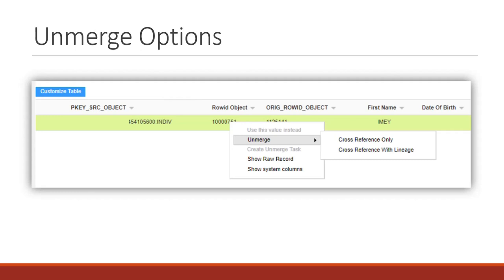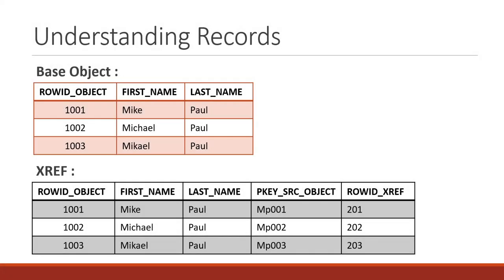So what are these two options and how do they work internally? That is what we are going to see in today's session. Before seeing how those unmerges happen, let's understand the records first. Assume that there are three records in the base object table with row ID objects 1001, 1002, and 1003, each with first names Mike, Michael, and Michael respectively. Each base object record has a corresponding xref record with row ID xref as 201, 202, and 203.